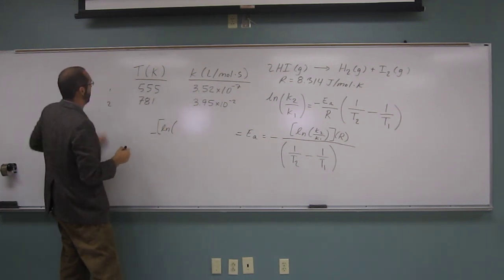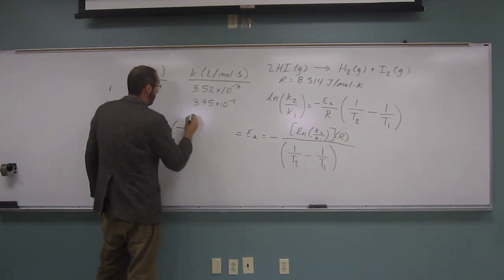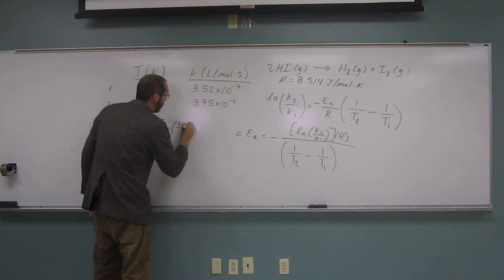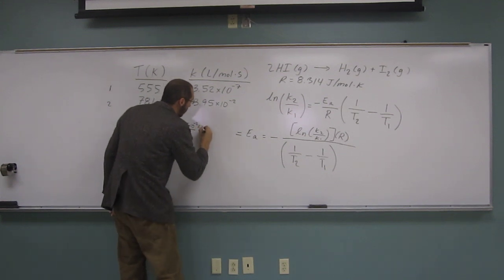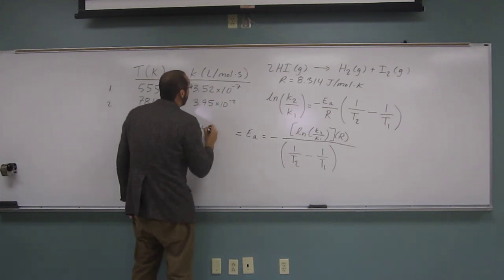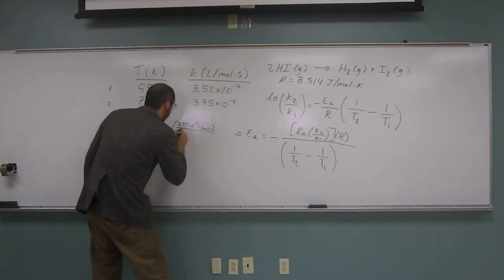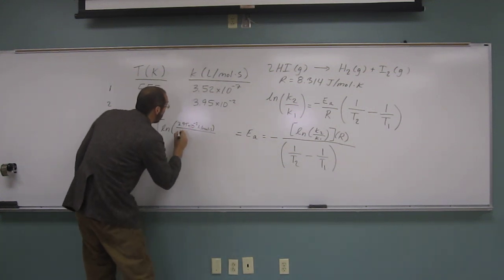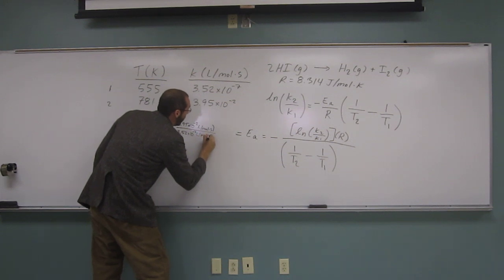So, reaction one, reaction two. So, 3.5 times 10 to the negative 2 liters per mole second, 3.52 times 10 to the negative 2.